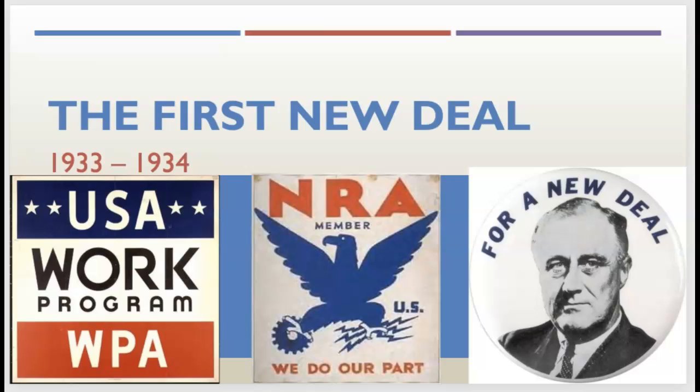FDR openly admitted he didn't know all the answers, but he said this nation asks for action, and action now. He also asked Congress for a broad executive power to wage a war against the emergency, saying we need to treat this like we're at war with an actual enemy.